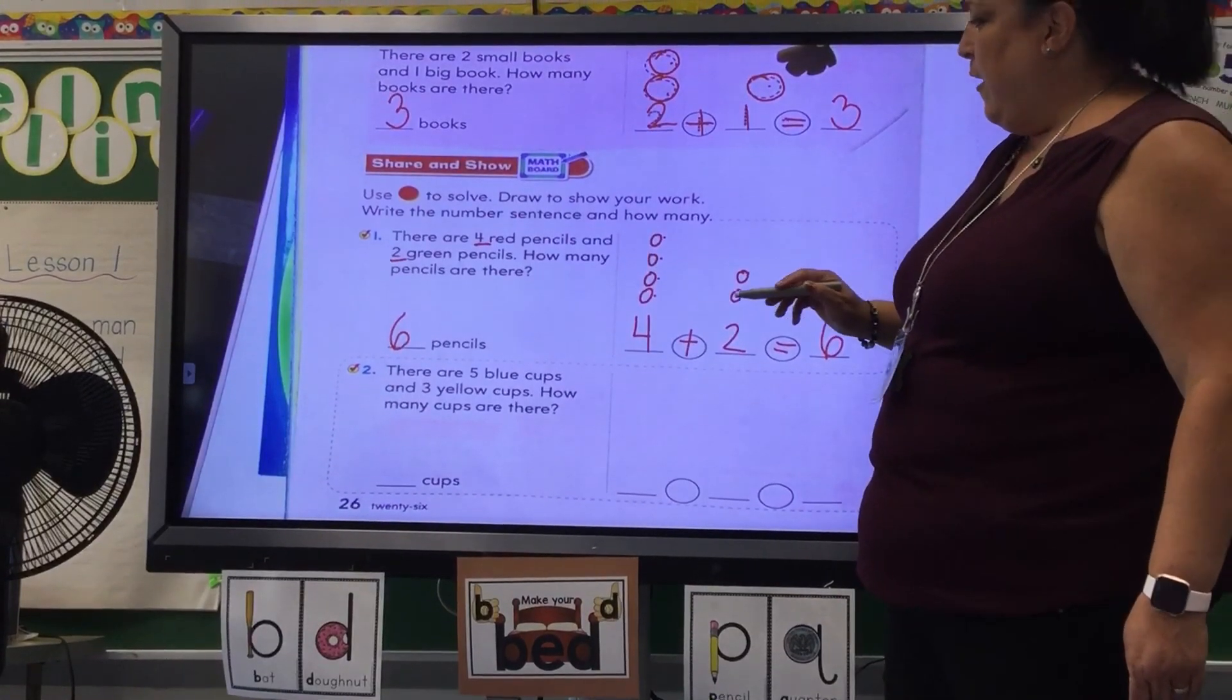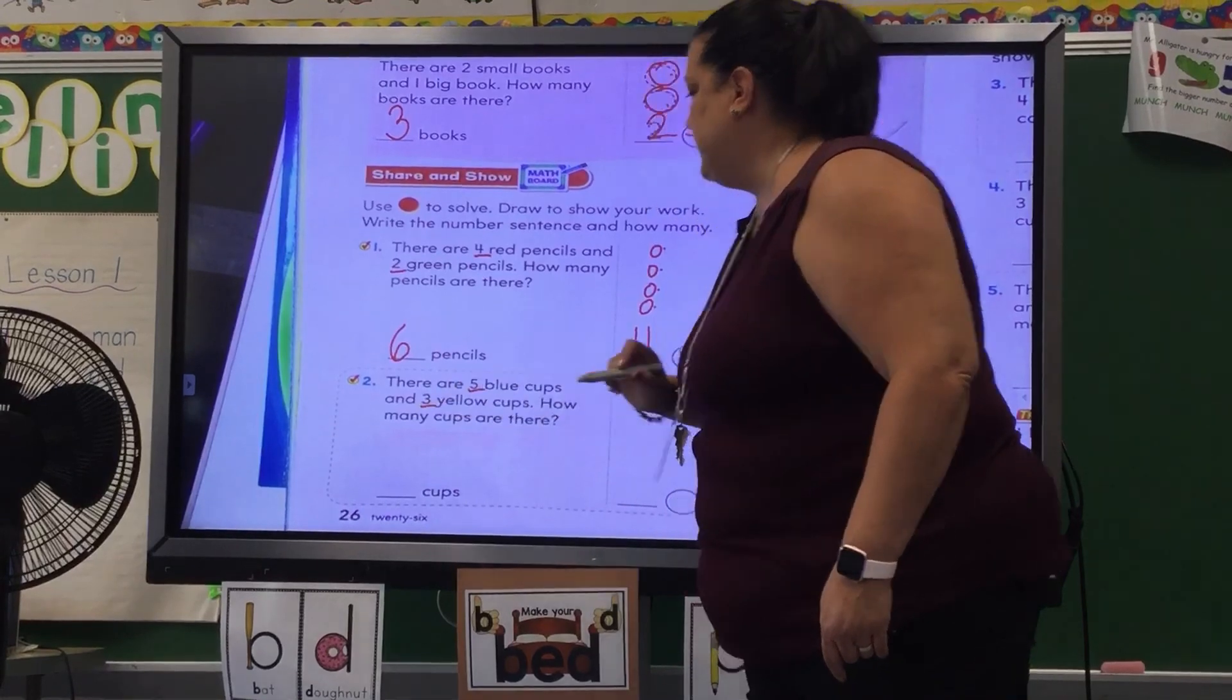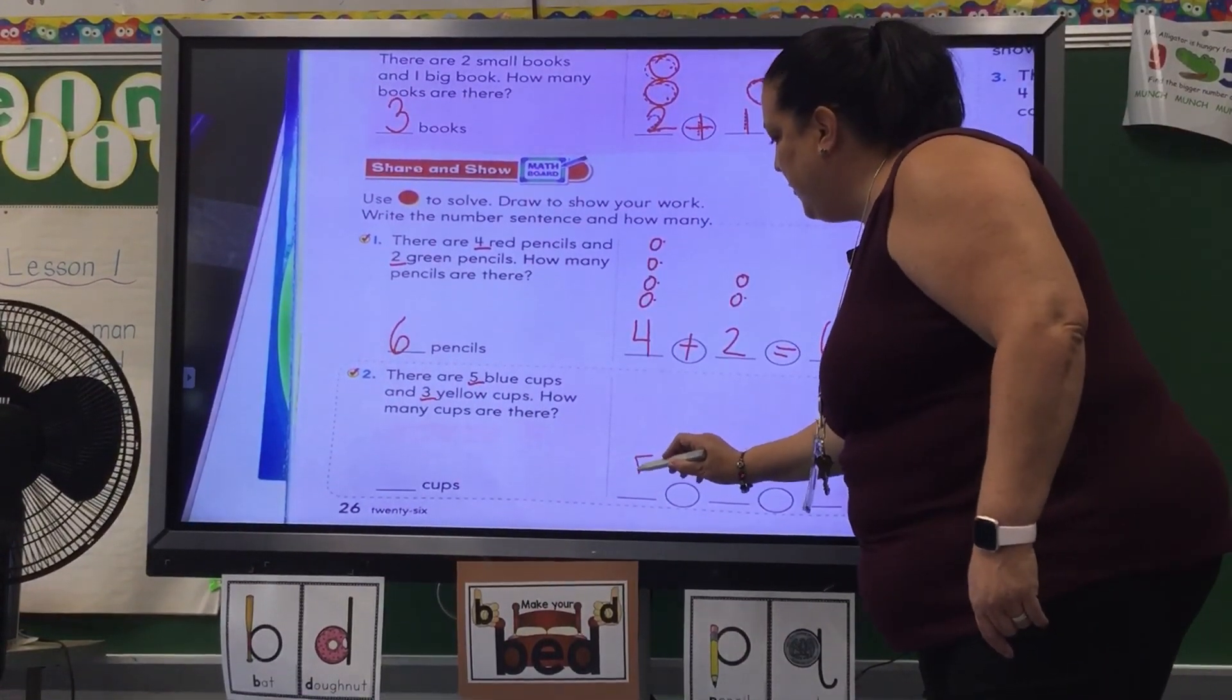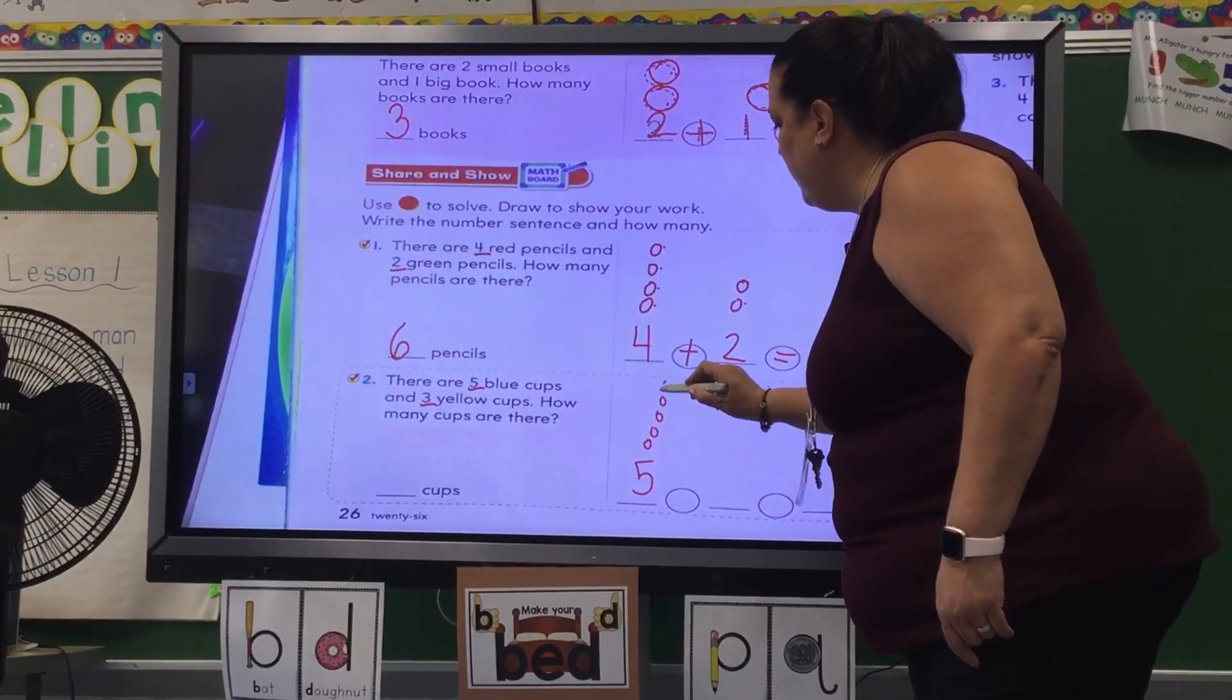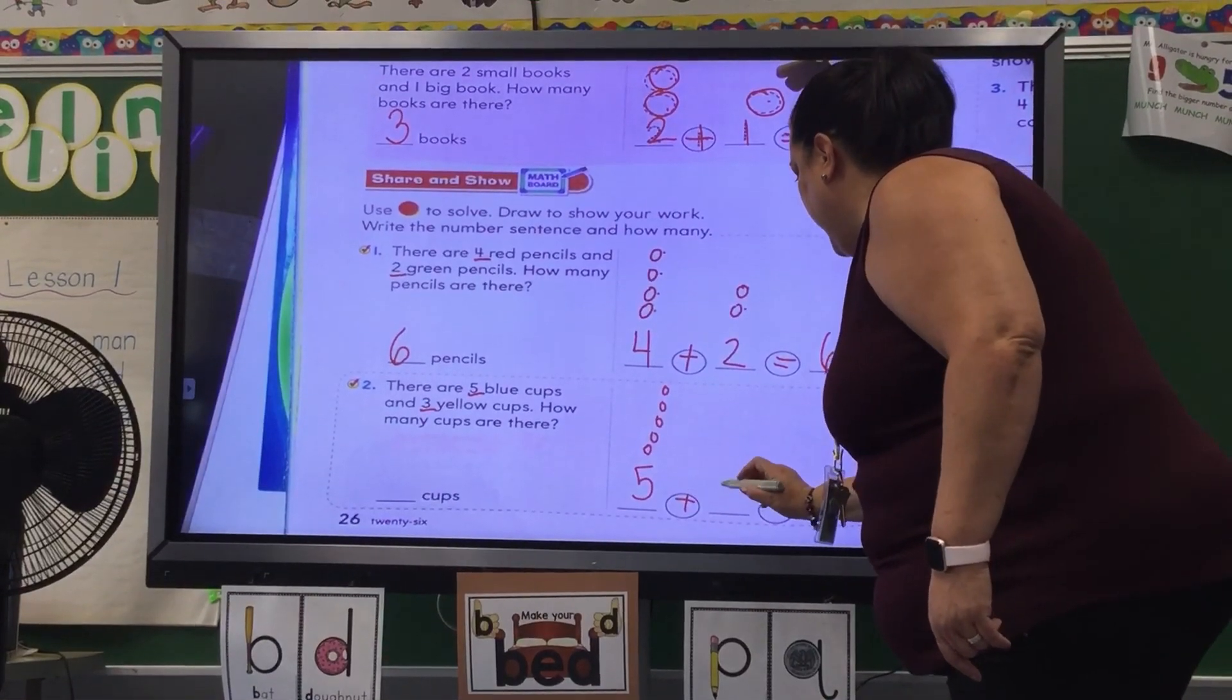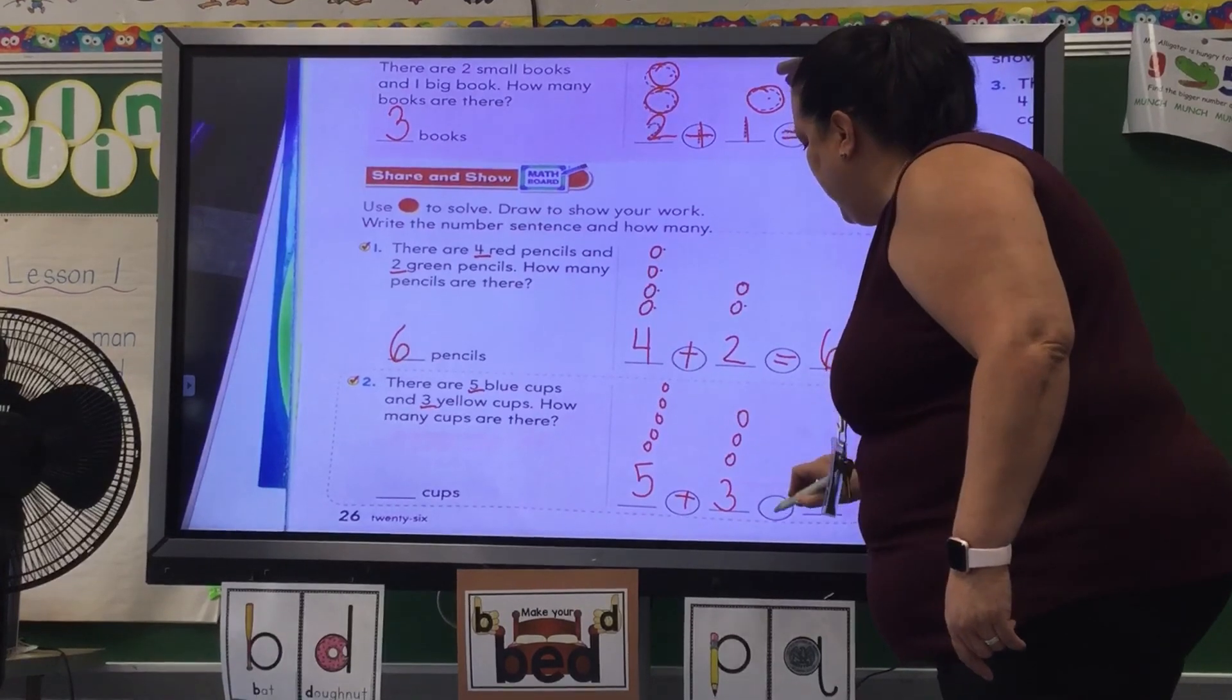Number two. There are five blue cups and three yellow cups. How many cups are there? Five blue. One, two, three, four, five. Plus three yellow. One, two, three. Equals.